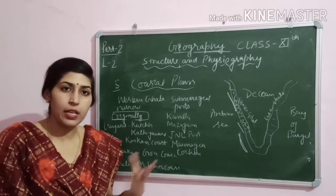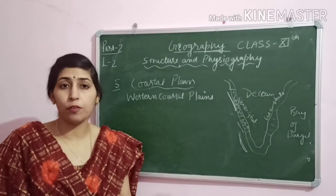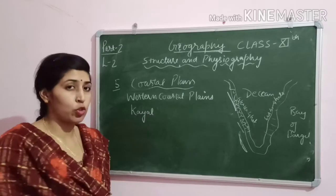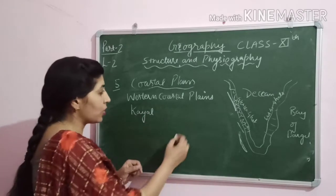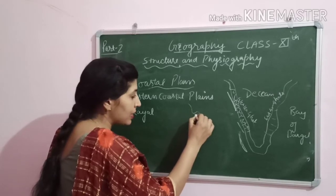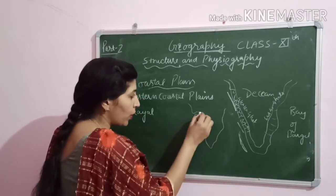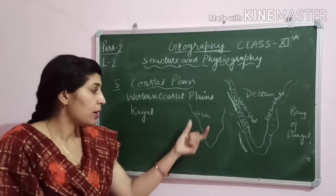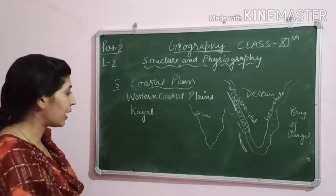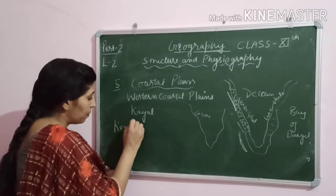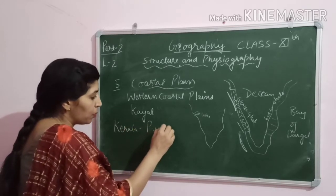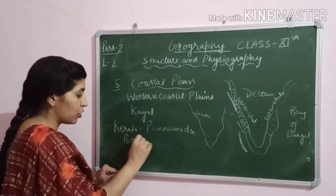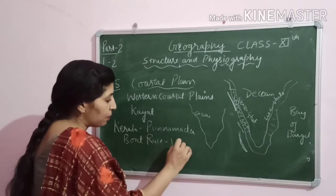One major characteristic of the western coastal region is the Kayaal, which is the regional name for backwater. When the coastal line encloses a space in the form of a lake, it is called Kayaal. This is found in Kerala, where there is a famous boat race known as Vallam Kali.